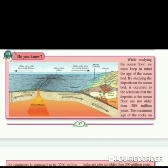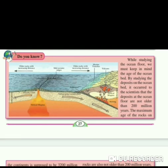Do you know? While studying the ocean floor, we must keep in mind the age of the ocean bed by studying the deposits on the ocean bed. It occurred to scientists that the deposits at the ocean floor are not older than 200 million years. The maximum age of the rocks on the continent is supposed to be 3,200 million years. Then, where have the deposits of the sea bed which are older than 200 million years gone?